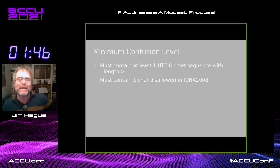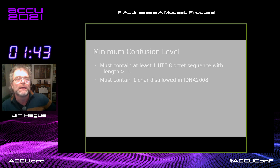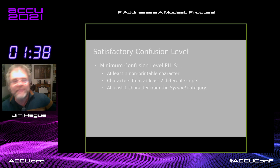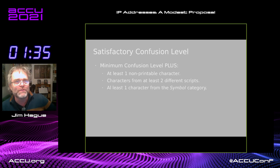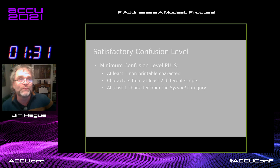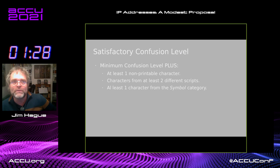If you've never met iDNA 2008, lucky you — it's the standard that lets you have non-ASCII in domain names. Satisfactory confusion: you must conform to minimum confusion, plus have at least one non-printable character — we particularly recommend form feed — characters from at least two different scripts, and at least one character from the symbol category.